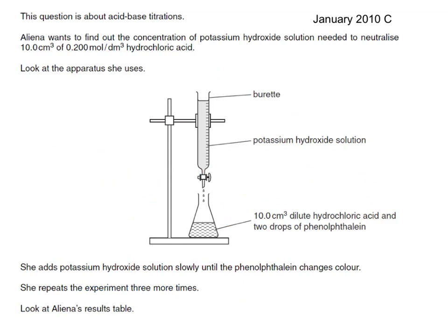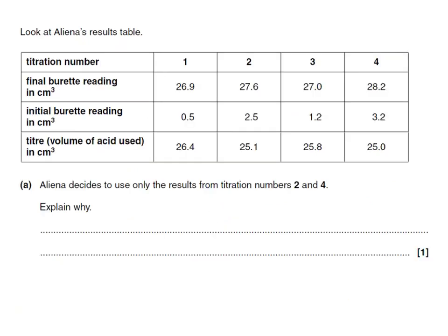Here's a past paper question about acid-base titrations. Alina wants to find the concentration of potassium hydroxide needed to neutralise 10 cm³ of a 0.2 mol/dm³ hydrochloric acid solution. She adds KOH slowly until the phenolphthalein just changes colour and repeats three more times. From her results table, she records initial and final burette readings and calculates the titre — the volume of acid added to neutralise the alkali.